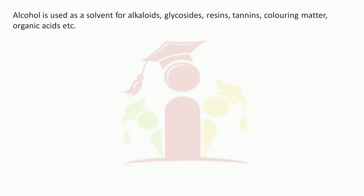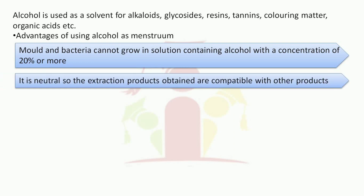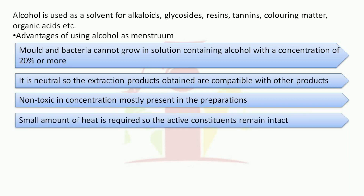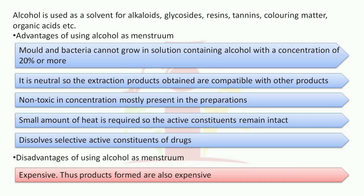Alcohol is used as a solvent for alkaloids, glycosides, resins, tannins, colouring matter, and organic acids, etc. Advantages of using alcohol as menstruum: mould and bacteria cannot grow in a solution containing alcohol with a concentration of 20% or more. It is neutral so the extraction products obtained are compatible with other products. It is non-toxic at concentrations mostly present in preparations. A small amount of heat is required so the active constituents remain intact. It dissolves selective active constituents of the drugs only. The one disadvantage is that alcohol is expensive, and the extracted products also become expensive.